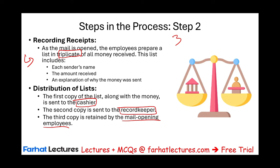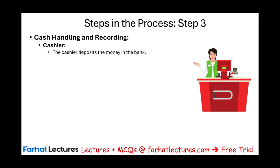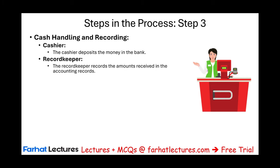The benefit of three copies is checks and balances — everyone knows what was sent and has a record of it, with all parties looking over each other. In step three, the cashier deposits the money in the bank, and the record keeper records the amount received in the accounting records. Notice: the cashier has the money and takes it to the bank; the accountant never sees it and only performs a journal entry. A supervisor then reconciles everything — comparing journal entries, bank deposits, and cash received.